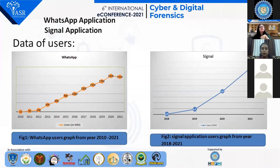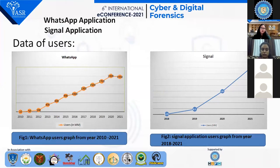We are familiar with WhatsApp and Signal applications, but the key difference is Signal's privacy features: disappearing messages, color check, screen security, and safety number.